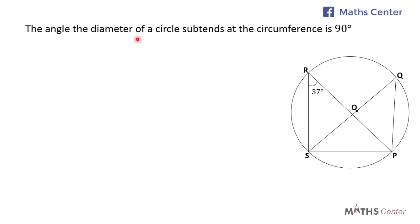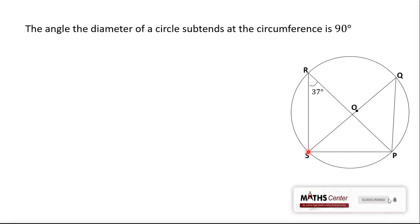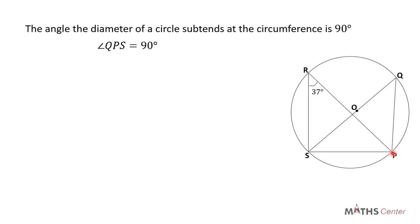The angle the diameter of a circle sustains at the circumference is 90 degrees. In our diagram, we can see that the line SOQ is a diameter because it passes through the center O. So the angle at point P, which is subtended by the diameter SOQ, is 90 degrees — meaning angle SPQ is 90 degrees.